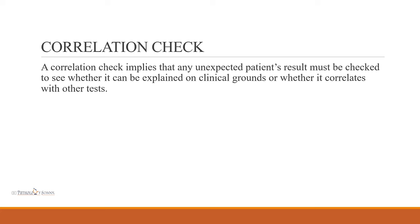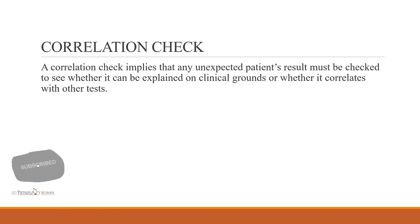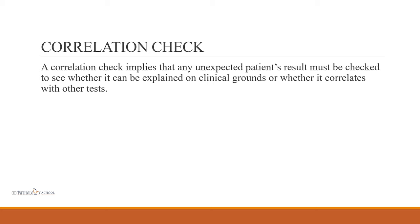Next is the correlation check, which is something routinely done in labs. If apparently high or low values are obtained, these values are correlated with clinical grounds to check whether the system is showing false results or it is actually happening. A correlation check implies that any unexpected patient result must be checked to see whether it can be explained on clinical grounds or whether it correlates with other tests.